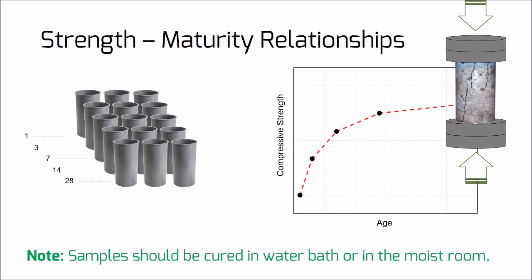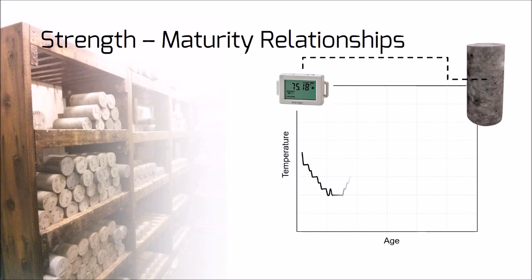Specimens should be tested for compressive strength at ages of 1, 3, 7, 14, and 28 days. At each age, two samples should be tested. If results vary more than 10% from the average, a third sample will be tested. Temperature variation should be monitored during curing using temperature sensors placed within concrete cylinders. ASTM C1074 requires temperature recording at intervals of 30 minutes or less for the first 48 hours and 60 minutes or less afterwards.